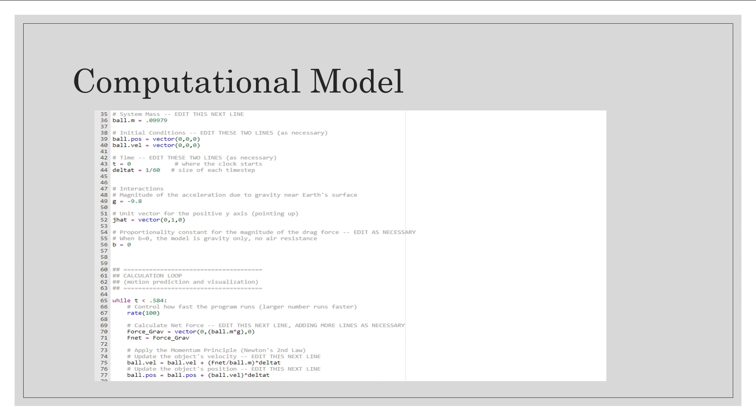Here is our code for the computational model without drag. I had to edit the ball's mass to 0.9979 kilograms, and I changed the velocity vector to all zeros and the position vector to all zeros, which we found earlier. I also had a change of delta T to 1 over 60, because I filmed in 60 frames per second. I also had to make the gravity negative 9.8 instead of 9.8, because it is going down towards the earth. I also had to change the time to 0.584, which was our time for subtracting the last time and the initial time.